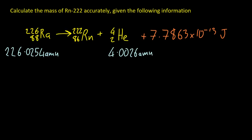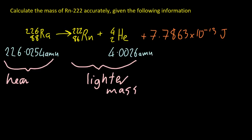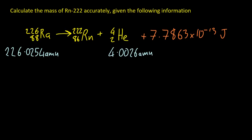Looking at a fission equation now, what's the mass of the radon 222, given the following information? Well, again, the product side have to be lighter than the reactant side. Now you can see how much energy is produced. 7.7863 times 10 to the minus 13 joules. So it's just a matter of converting that into atomic mass units. So the mass and the energy on the reactant side equals the mass and the energy on the product side.